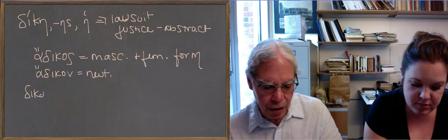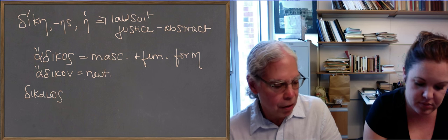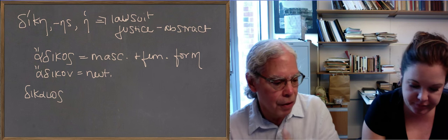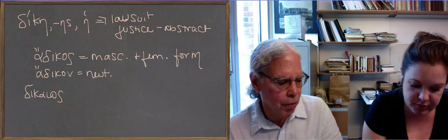That has three genders: dikaios, dikaia, dikaion. Notice it has an iota before the os ending, so you're going to preserve the original long alphas. They're not going to become etas.